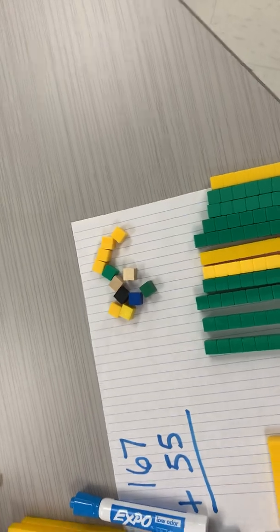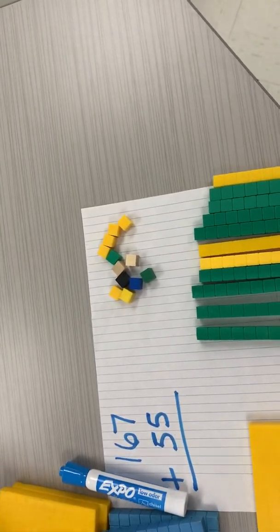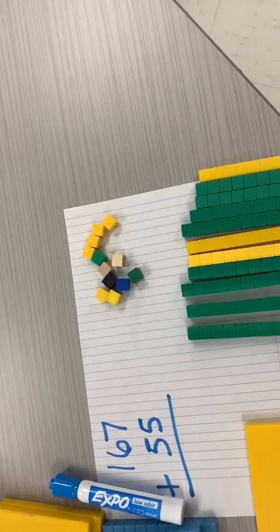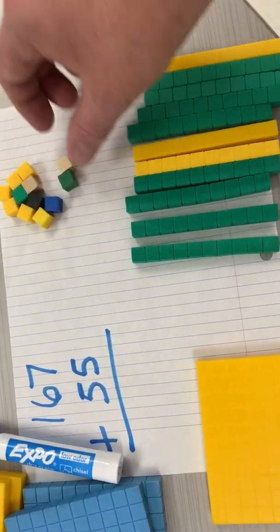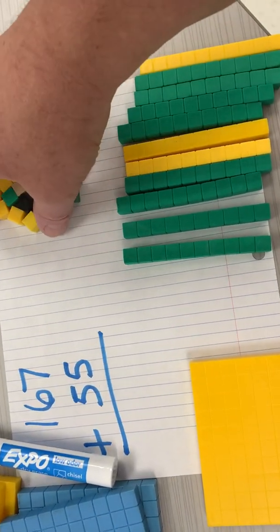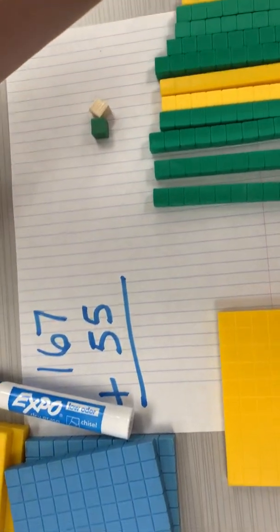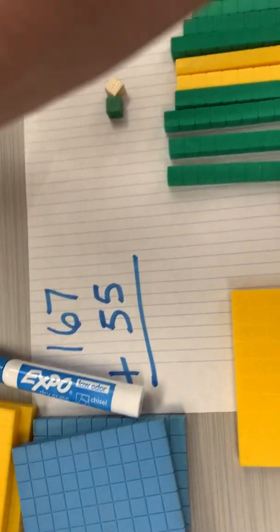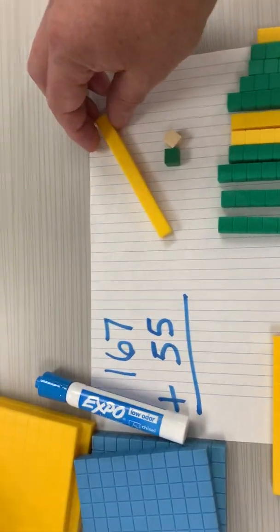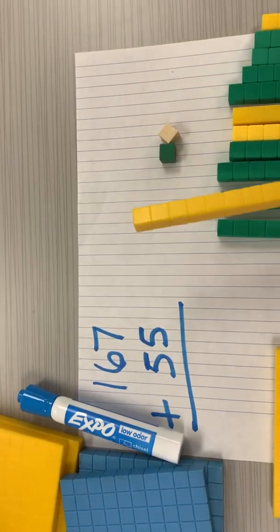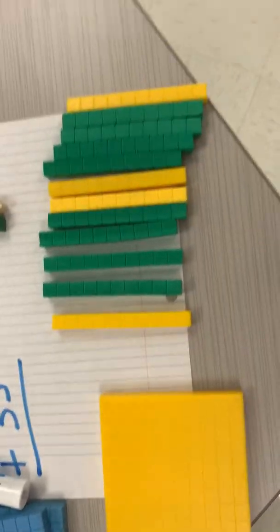Can I have 12 in the ones place? No, I definitely cannot. So I'm gonna have to regroup. So I'm gonna keep the 2, and I'm gonna take these 10 and I'm gonna regroup into a 10 like this. So I took the 10 ones and I got a 10, so I'm gonna add that to this group here.